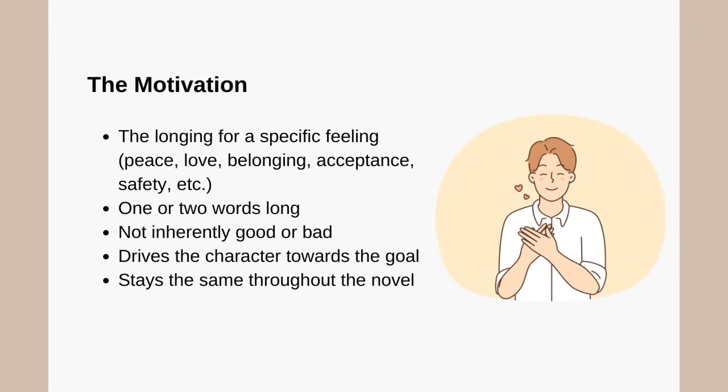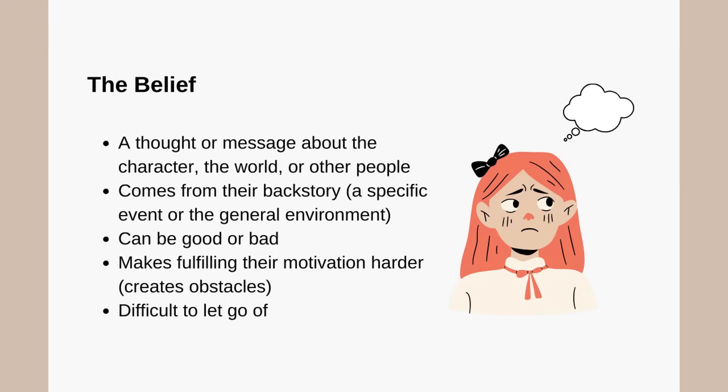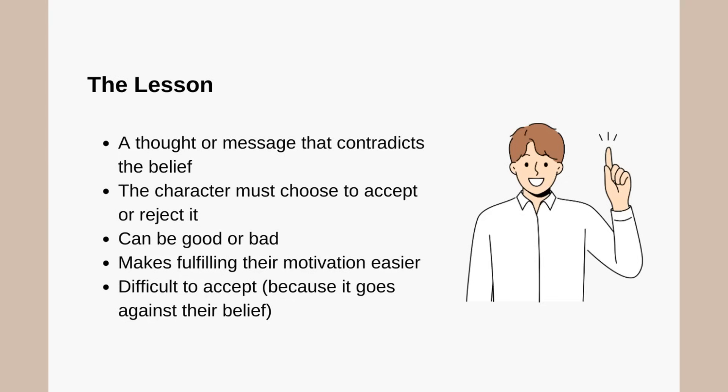Here's a cheat sheet summary of each component. The motivation: the longing for a specific feeling — peace, love, belonging, acceptance, safety, etc. One or two words long. Not inherently good or bad. Drives the character towards the goal. Stays the same throughout the novel. The goal: what the character is trying to achieve. Tangible to the reader — the reader can tell whether it's been achieved or not. The character thinks it will fulfill their motivation. Can change over the course of the novel. Must be something the character can move towards. The belief: a thought or message about the character, the world, or other people. Comes from their backstory, a specific event, or the general environment. Can be good or bad. Makes fulfilling their motivation harder — it creates obstacles. Difficult to let go of. The lesson: a thought or message that contradicts the belief. The character must choose to accept or reject it. Can be good or bad. Makes fulfilling their motivation easier. Difficult to accept because it goes against their belief.